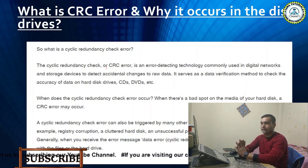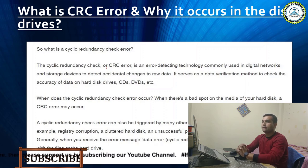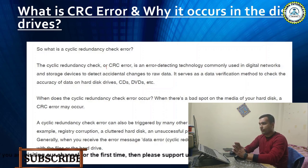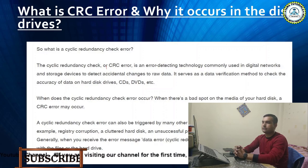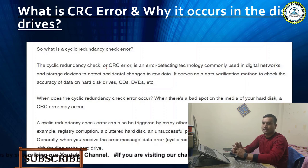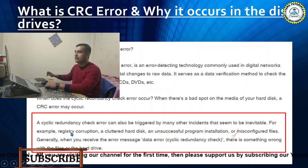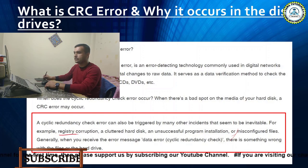Cyclic redundancy check is an error-detecting technology or method by which data verification takes place to check the accuracy of data on hard drives, CD, or DVD. This method is commonly used in digital networks as well as in various storage devices. Whenever there is a mismatch in the accuracy of the raw data, the CRC error occurs. When this error occurs, it means there is a bad spot on the media of your disk and you should be very serious about it.